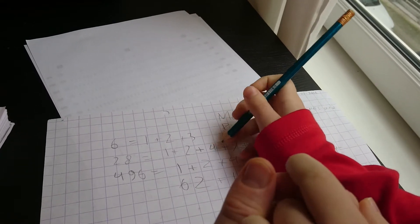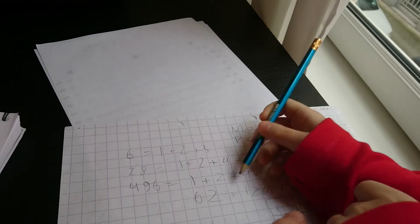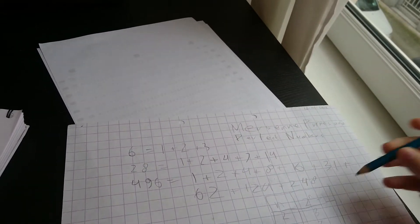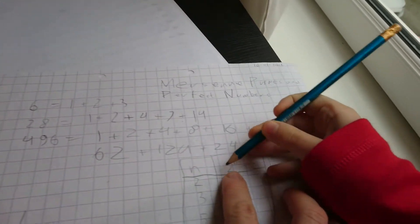No, Mersenne prime number. What is a Mersenne prime number? It's 2 to the M minus 1, where that's a prime number.